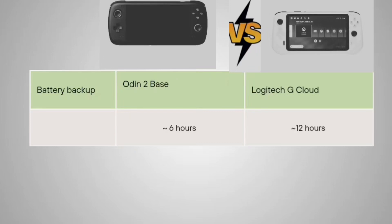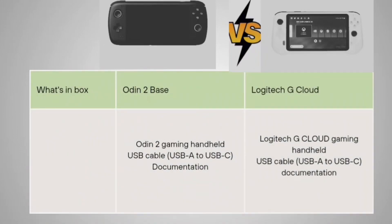Coming to battery backup: the Auden 2 Base gives 6 hours of backup, while the Logitech G Cloud gives 12 hours. Since the Logitech G Cloud doesn't run games locally — it works on cloud-based streaming — the system has less processing load, which means reduced access speed but increased battery life.